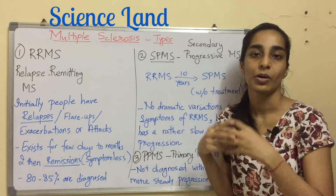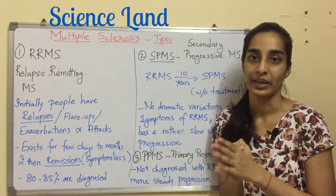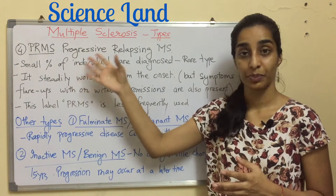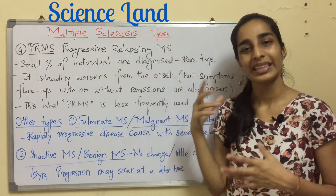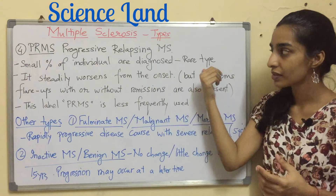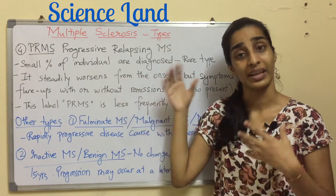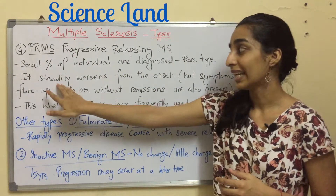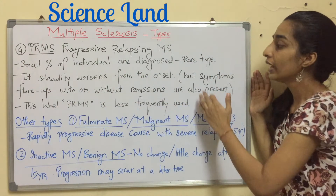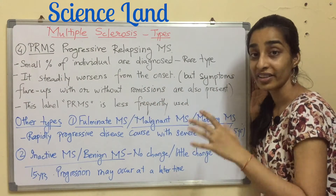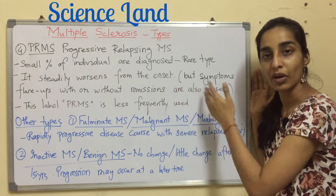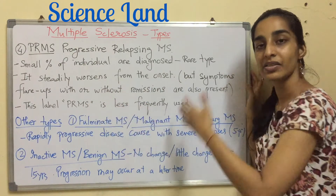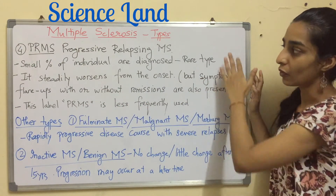Apart from these three, there are a few other types of multiple sclerosis. The first is PRMS — progressive relapsing multiple sclerosis. It is a rare type of multiple sclerosis, so a small percentage of individuals are diagnosed with it. In this type, the symptoms steadily worsen from the onset. Symptom flare-ups, which are the relapses, with or without remissions, are also present. There may or may not be relapse and remission. The label PRMS is less frequently used.